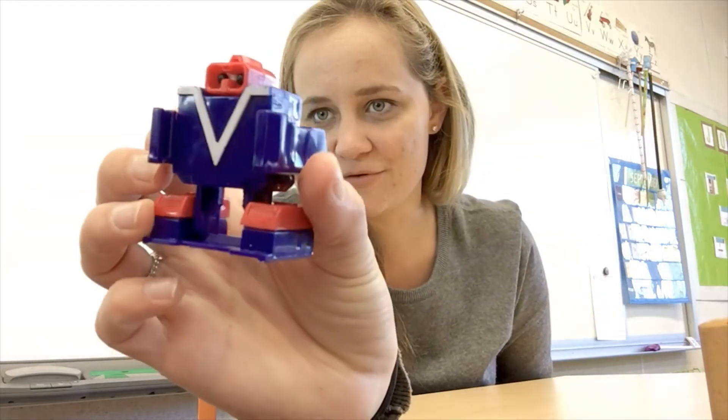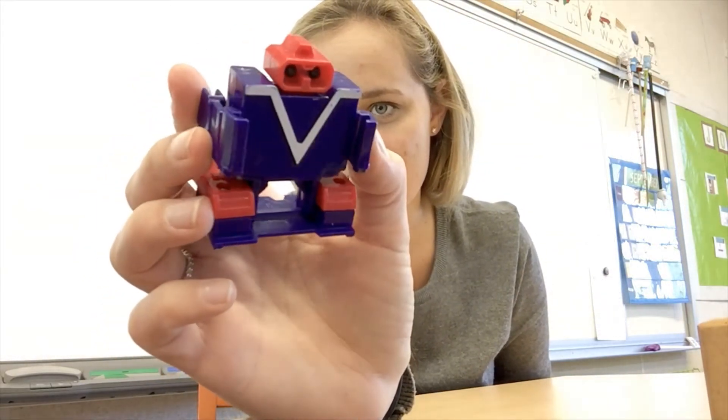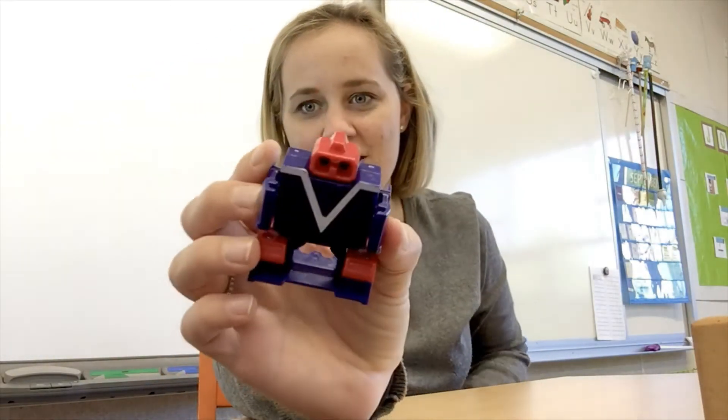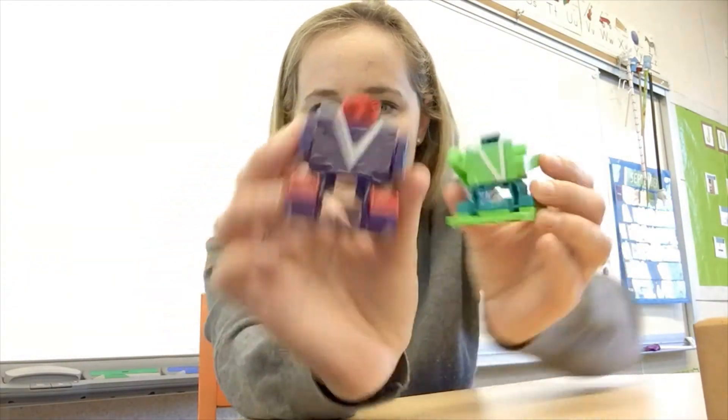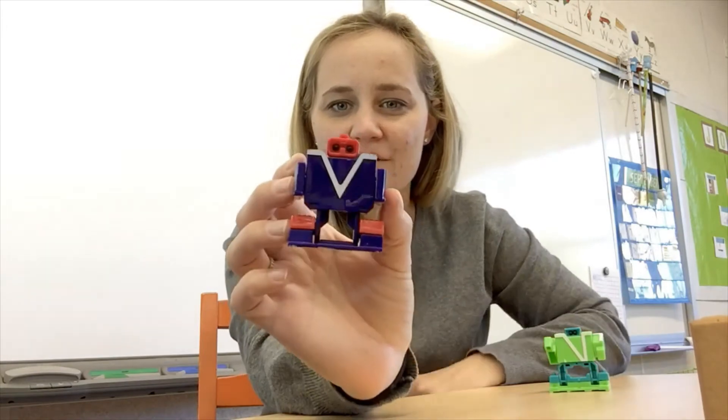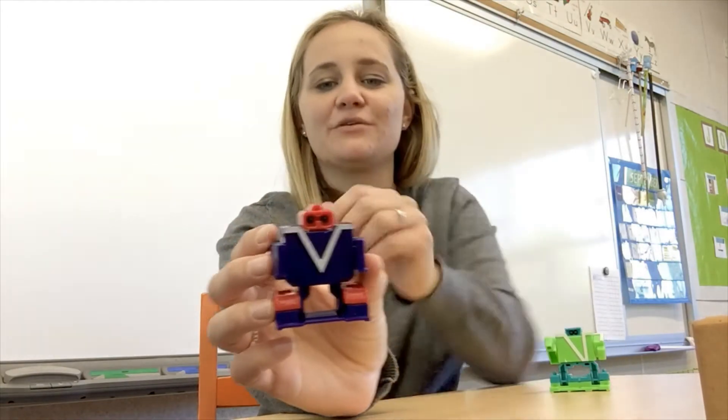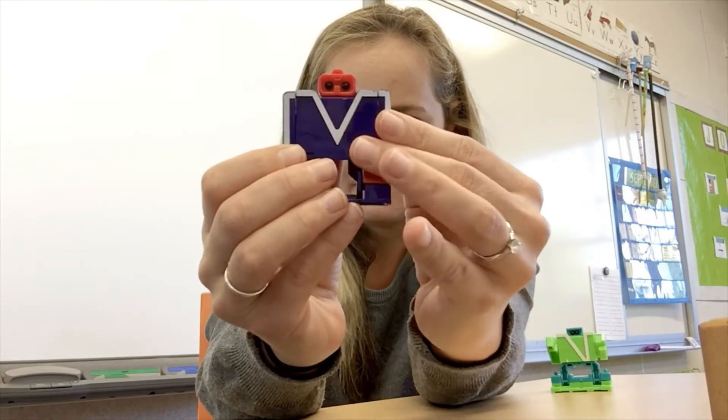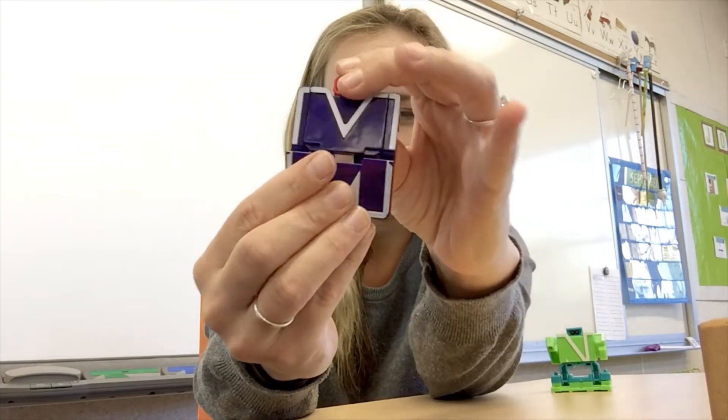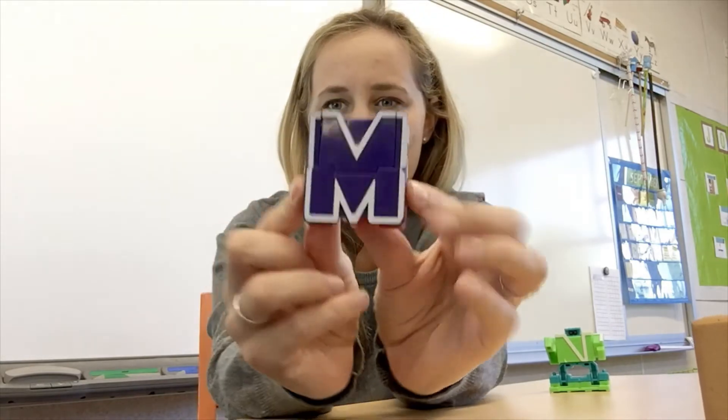So here are my alphabots. That's what the first one looks like. And then this is what the second one looks like. Let's find out which letter this bot will transform into. Here I go. It's the letter M. M is the first alphabot.